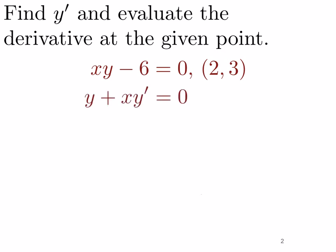So taking the derivative of x times y, we have the derivative of the first term, which is x, that would be 1, times the second term — so our first term in the derivative is y — plus the first term x times the derivative of y, which would be y prime. Then minus the derivative of 6, which is 0. And then equal to the right-hand side, the derivative of 0 is 0.